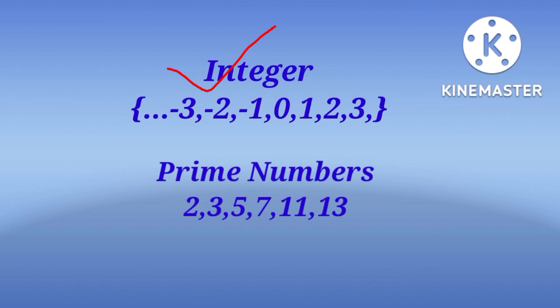Then what is integer - the set of whole numbers and negative natural numbers is called integer or purno sankhya. Then what is prime numbers - numbers which have only two factors, one and itself, are called prime numbers or moli sankhya.